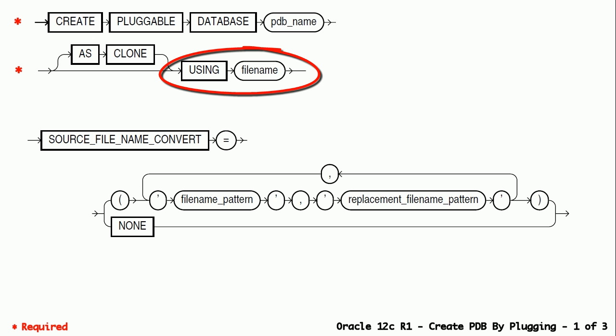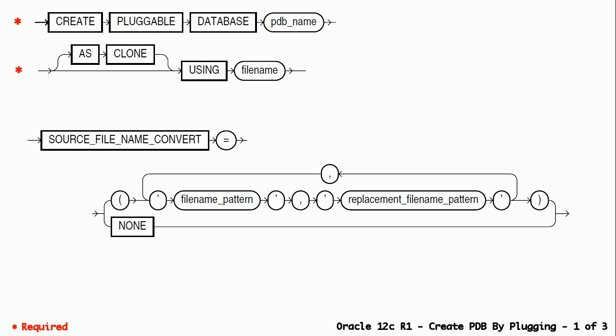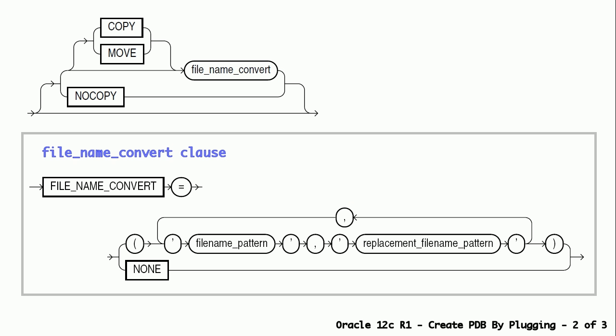USING xml_file_name, which was created earlier using the unplug command. SOURCE FILE NAME CONVERT clause can be used if the file locations inside the XML file do not accurately describe the locations of the source database files. We can manually edit the XML file to avoid using this clause. COPY clause can be used if we want the source database files to be copied to the new location for the new PDB.